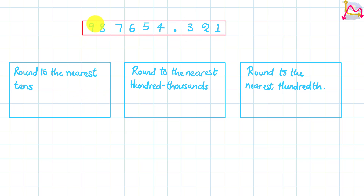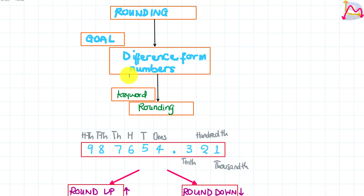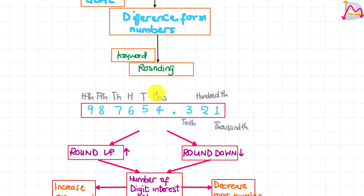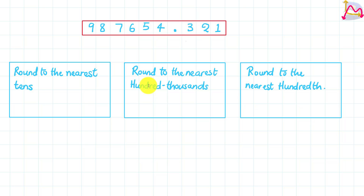When you're given a question like this and you're given a number which has a decimal point, you are asked to round to the nearest tens, round to the nearest hundred, thousands, and round to the nearest hundredth. You need to recognize a couple of rules that we've talked about in our previous video, and looking at how rounding is going to be important in terms of approximation — not only what we're going to do now, but later in the future.